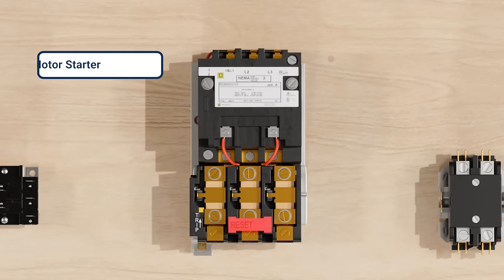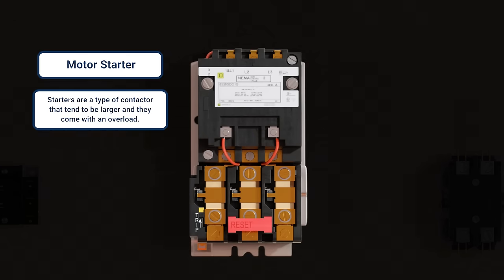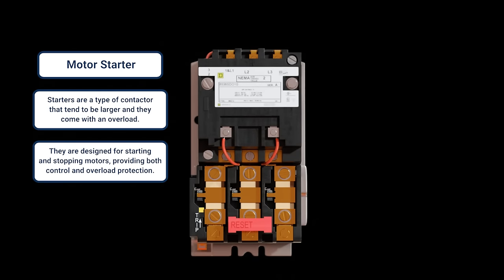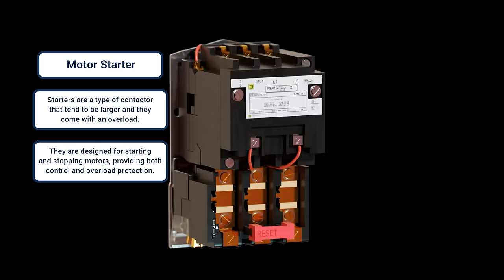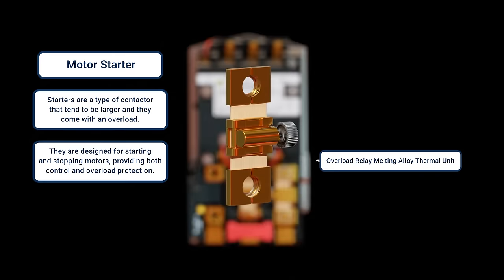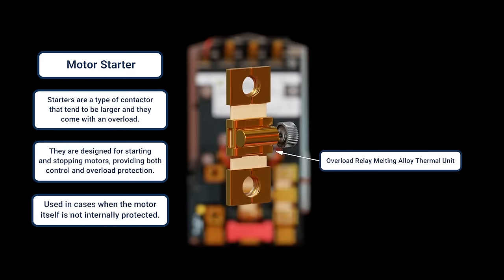Starters are a type of contactor that tend to be larger and they come with an overload. They're designed for starting and stopping motors, usually in commercial and industrial applications. And they provide both control and overload protection. Again, they're basically a large contactor with overload protection, mostly in cases where the motor itself is not internally protected.